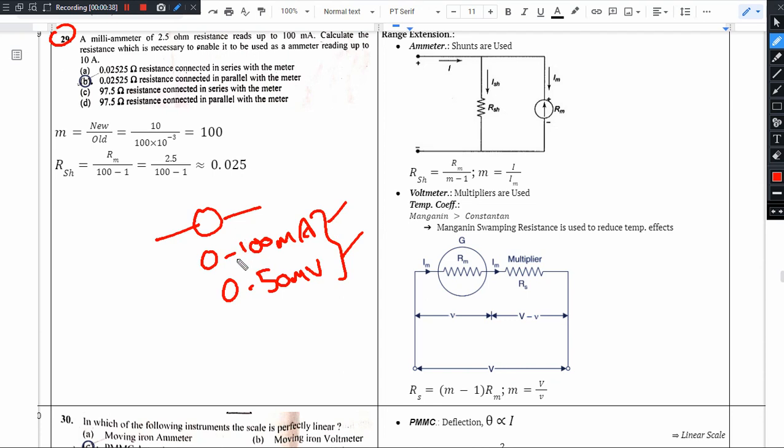If you want to make ammeter range, we will use shunts and multipliers. This comes on the topic of range extension. Ammeter uses shunts, which is an instrument to measure weak current, so this will be a multiplying factor.